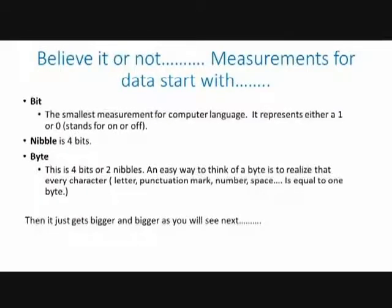Now we're going to talk about the measurement of the things inside your computer — that being bits, nibbles, bytes, and kilobytes. A bit makes up a nibble, which makes up a byte. A byte has four nibbles. A byte is the equivalent of one character — what I mean by one character is one letter, one number, one comma, one space. Anything that is considered a character is what that is.